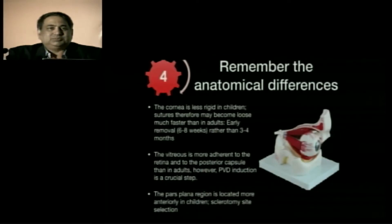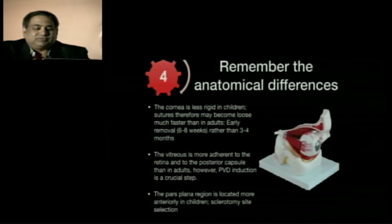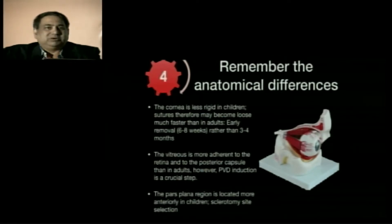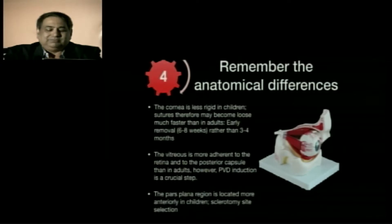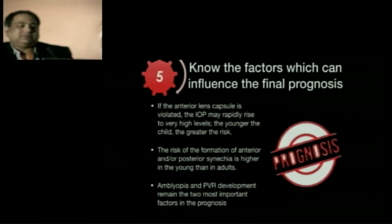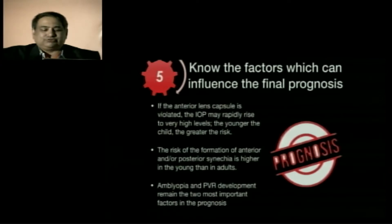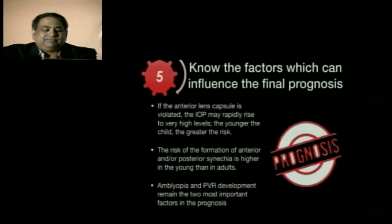Remember the anatomical differences between a child's eye and an adult's eye. The cornea is less rigid, so sutures become loose more quickly — corneal sutures should be removed at six to eight weeks rather than later as in adults. The vitreous is more adherent and PVD is absent, which must be kept in mind. The pars plana is more anterior, influencing sclerotomy site selection. Children tend to have more inflammation; lens capsule rupture can cause very high IOP early on, and formation of synechiae is much higher. Amblyopia and PVR are the two most important factors affecting prognosis in pediatric trauma.